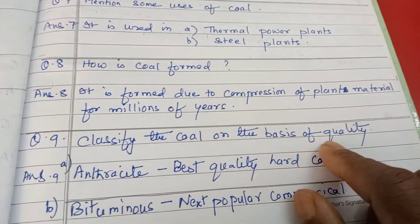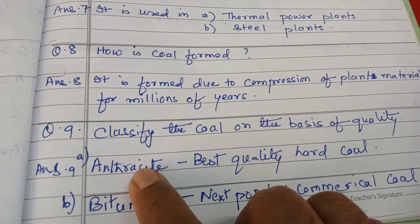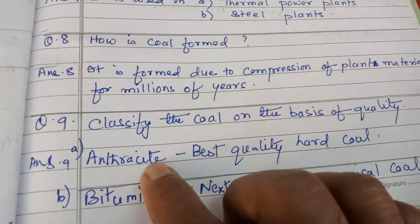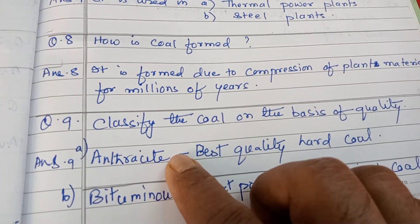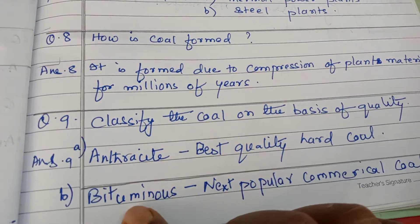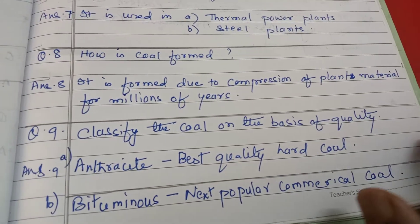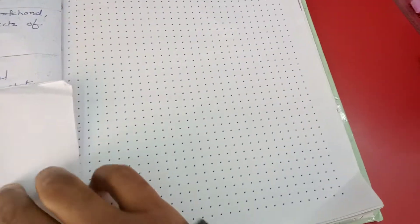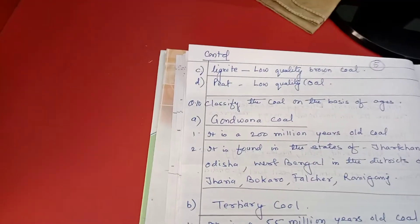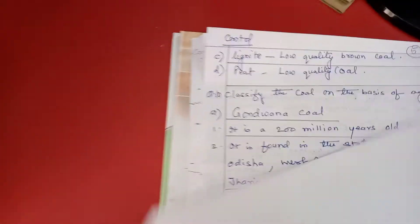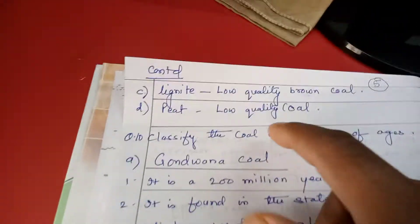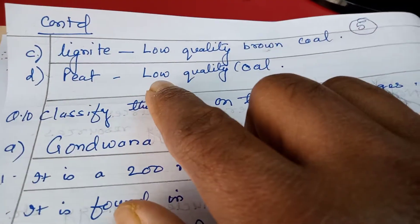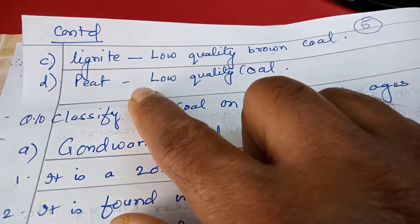Classifying coal on the basis of quality from best to poorest: the best quality hard coal is anthracite. Next is bituminous coal, which is a popular commercial coal. Then we have lignite, the low-quality brown coal. The poorest quality of coal is peat.